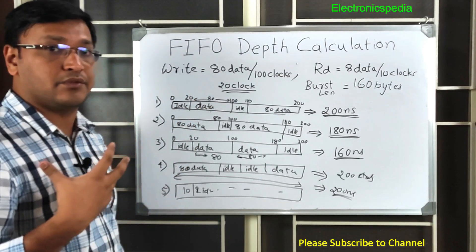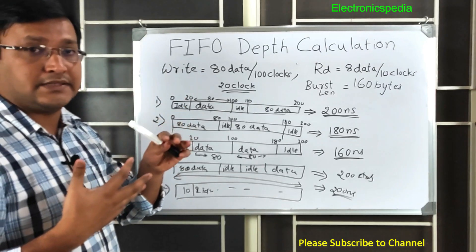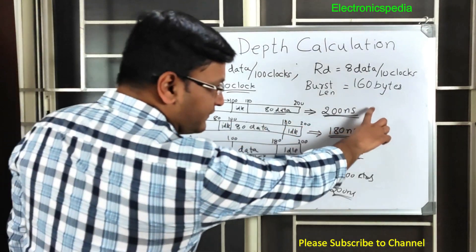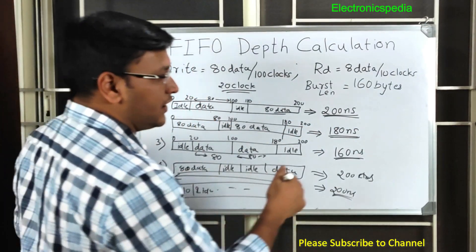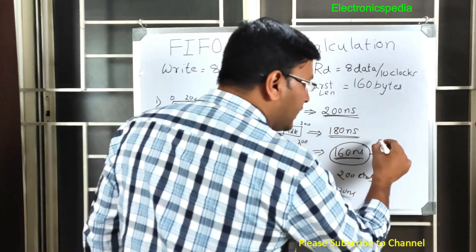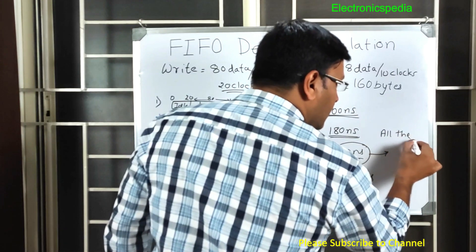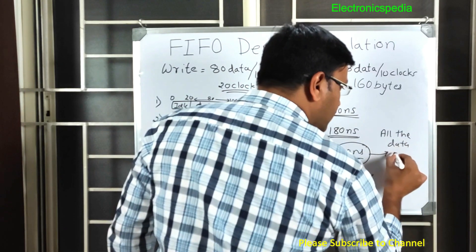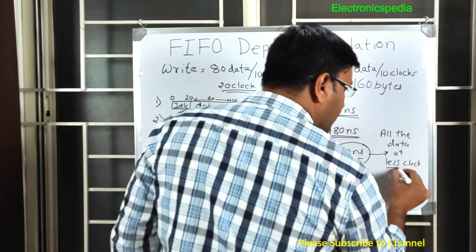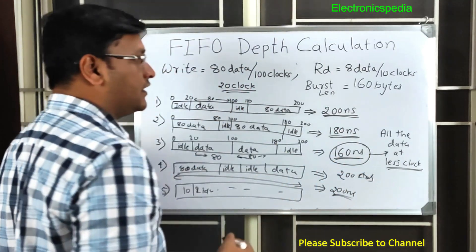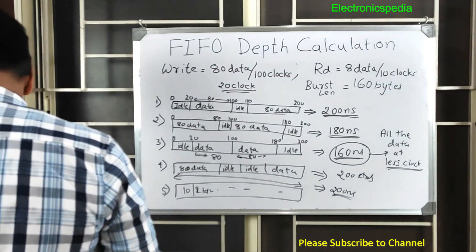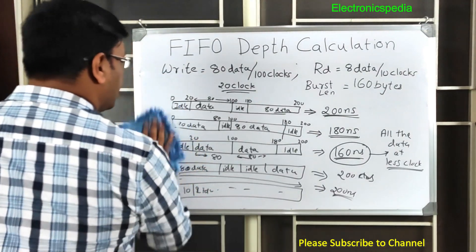To calculate the FIFO depth, you need to consider the worst case. Worst case means the write side is at the fastest pace and the read side is at the slower side. Looking at all five combinations, the case where we write all 160 bytes in only 160 clock cycles — Case 3 — is the worst case we must consider for the FIFO depth calculation.